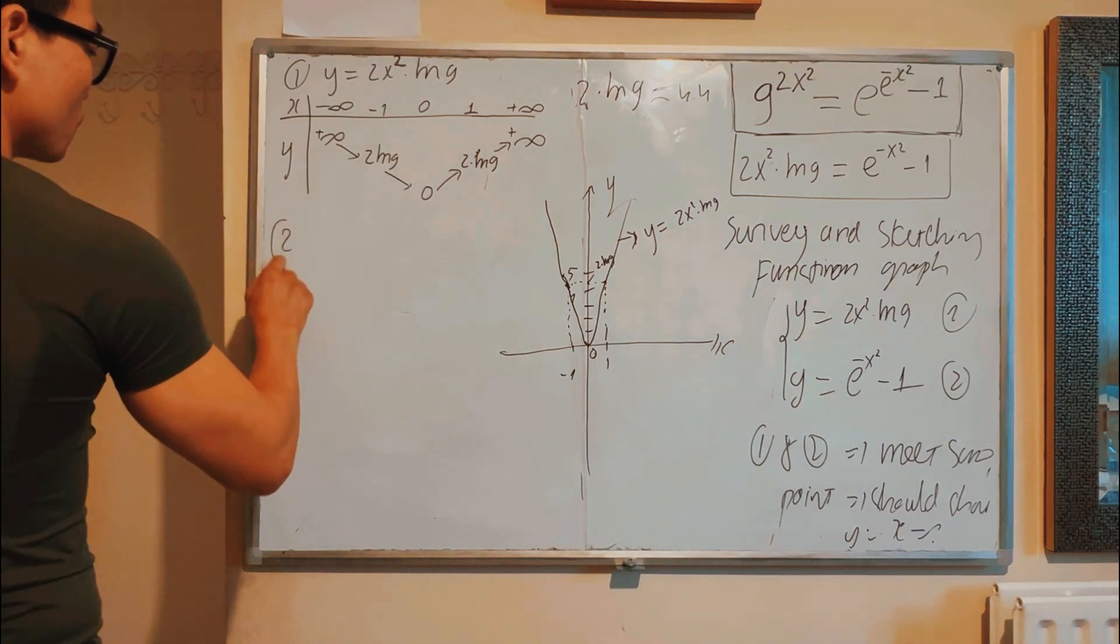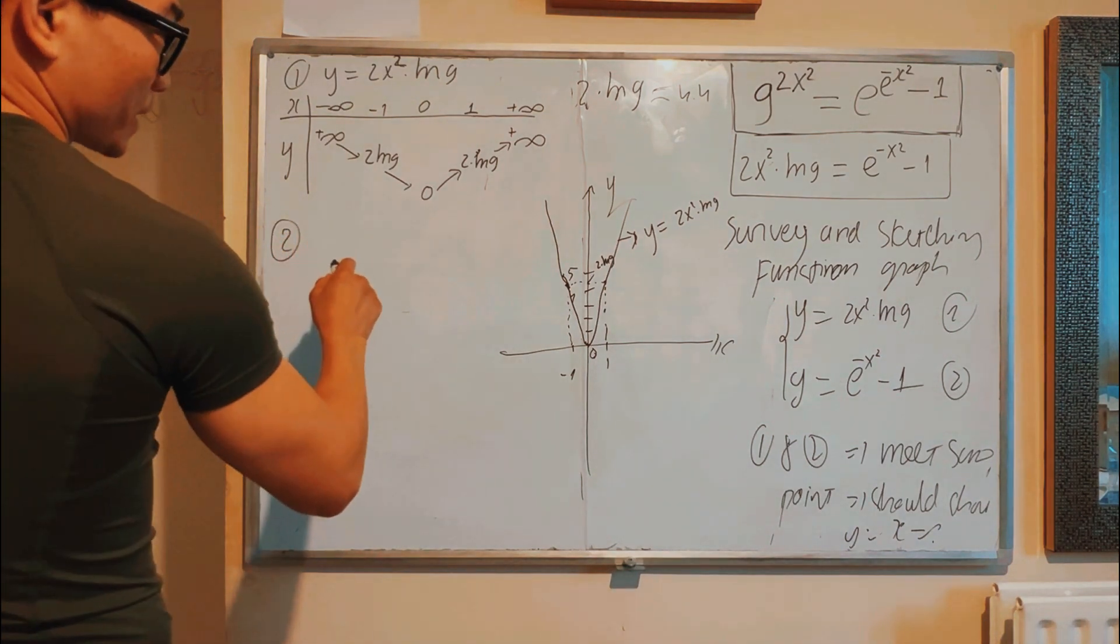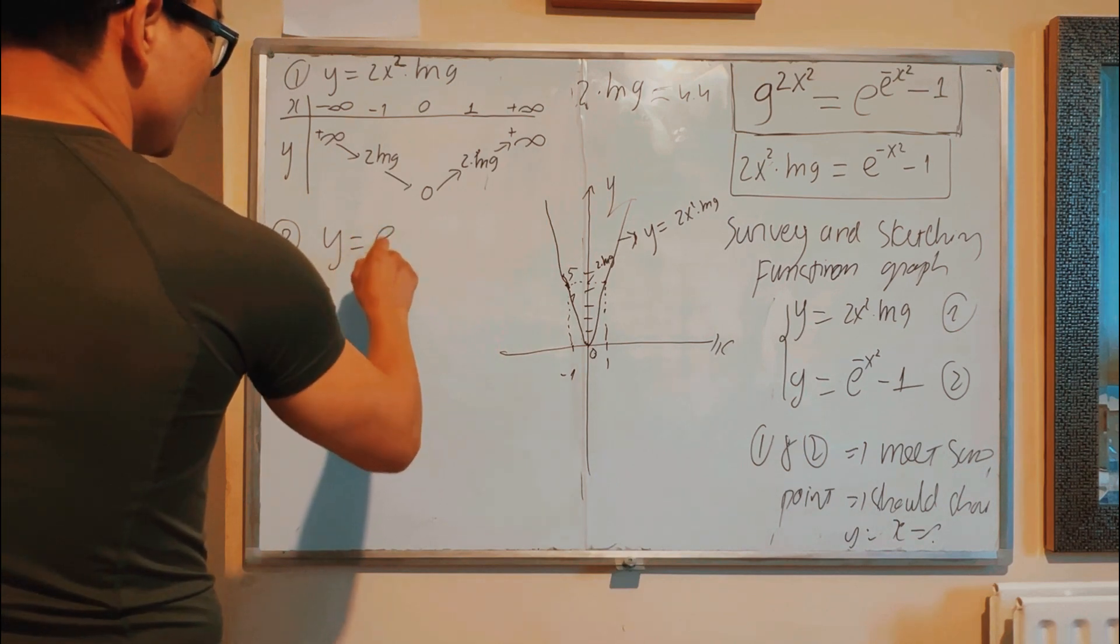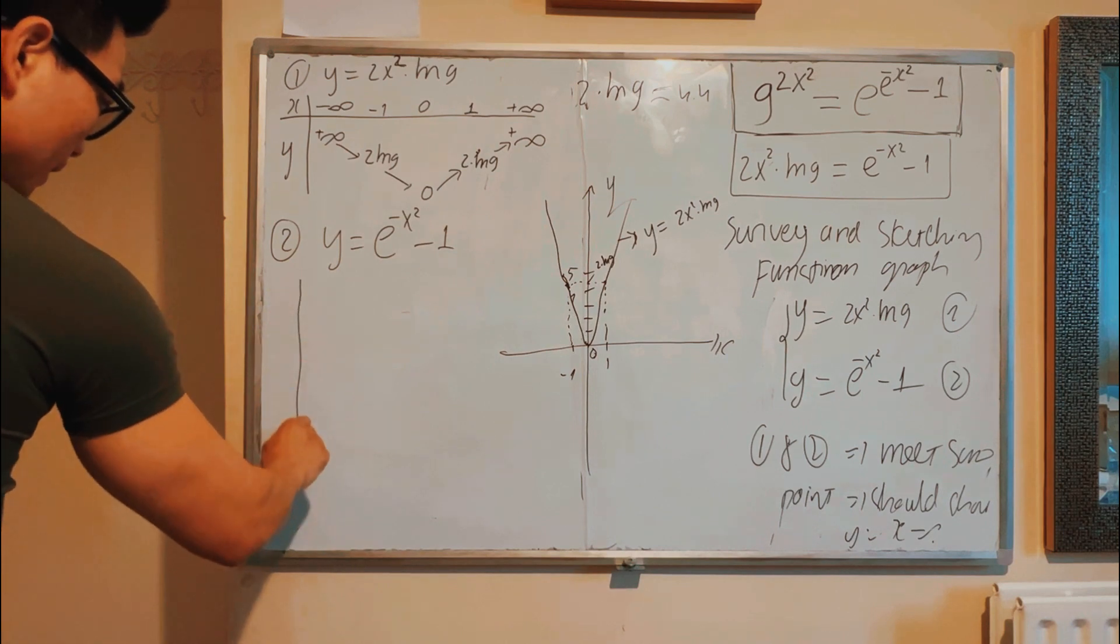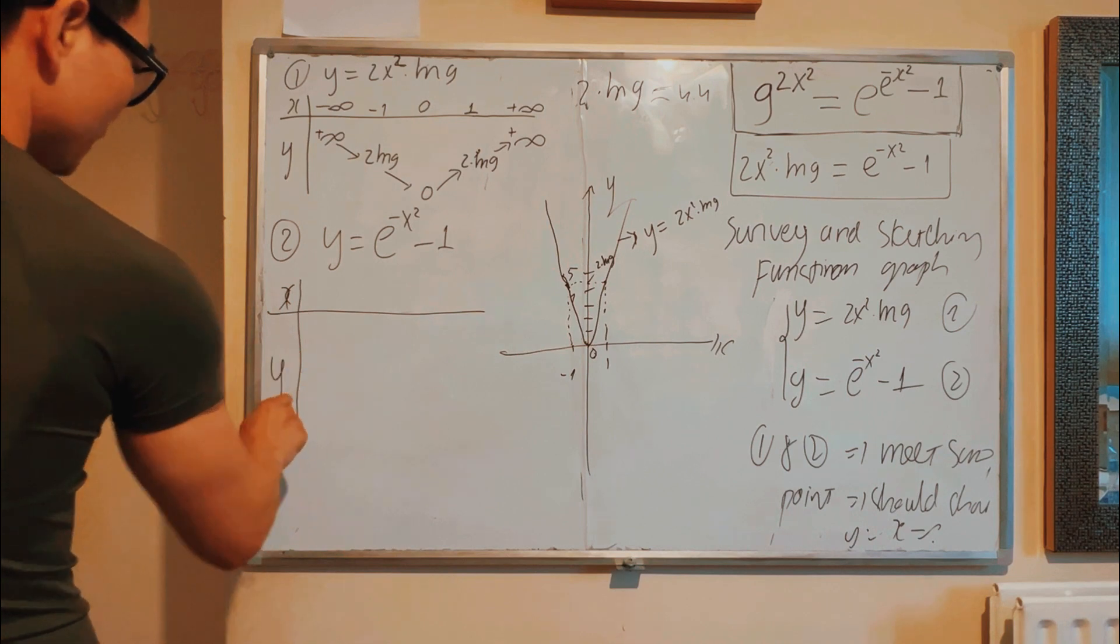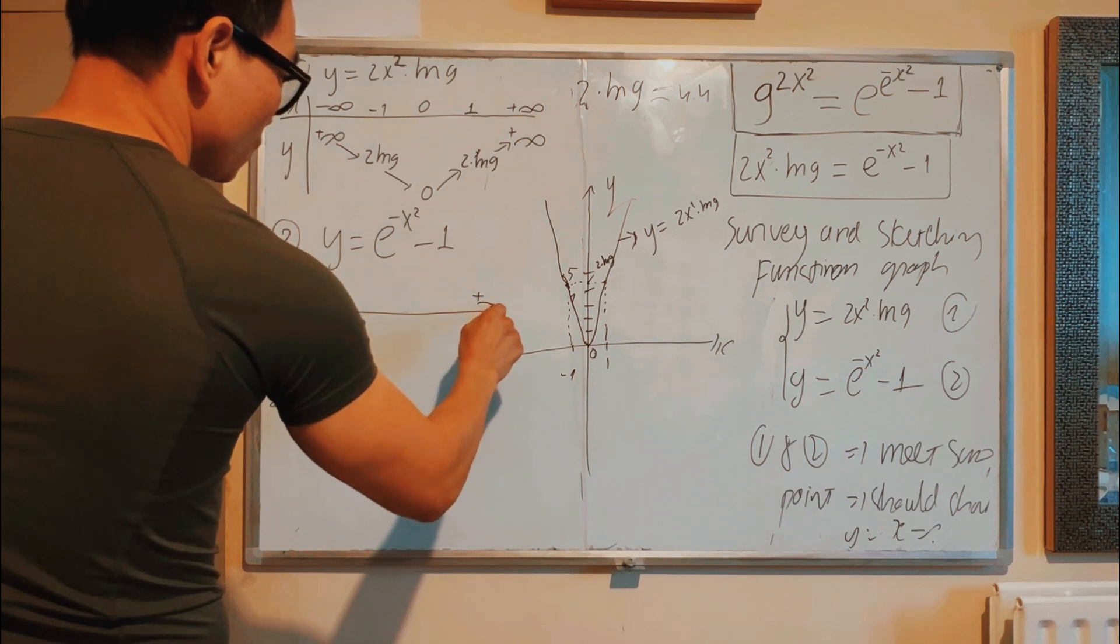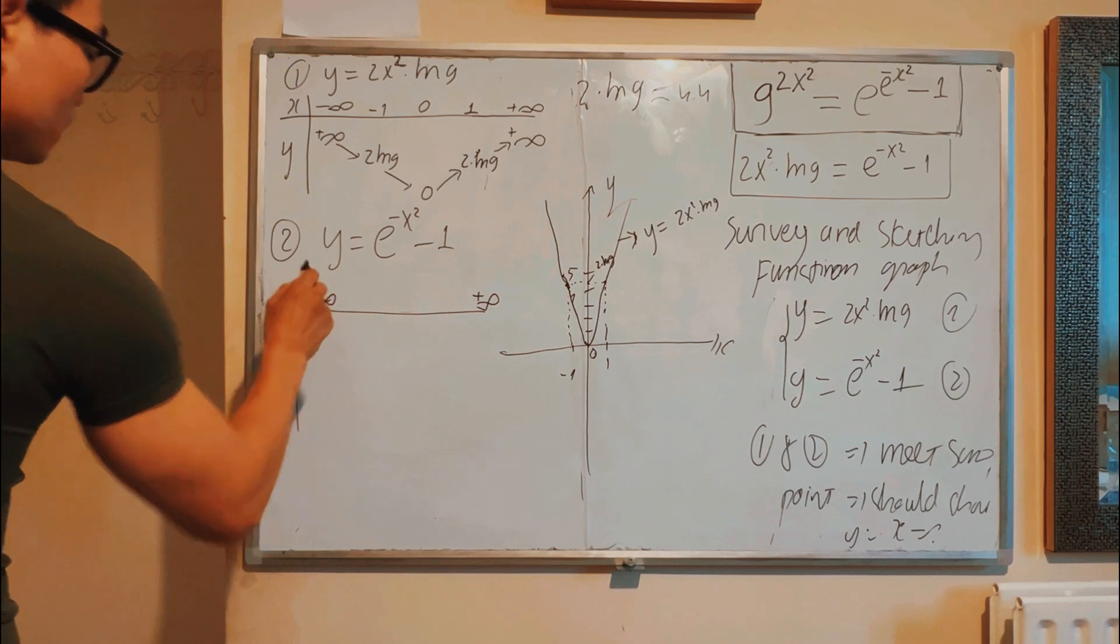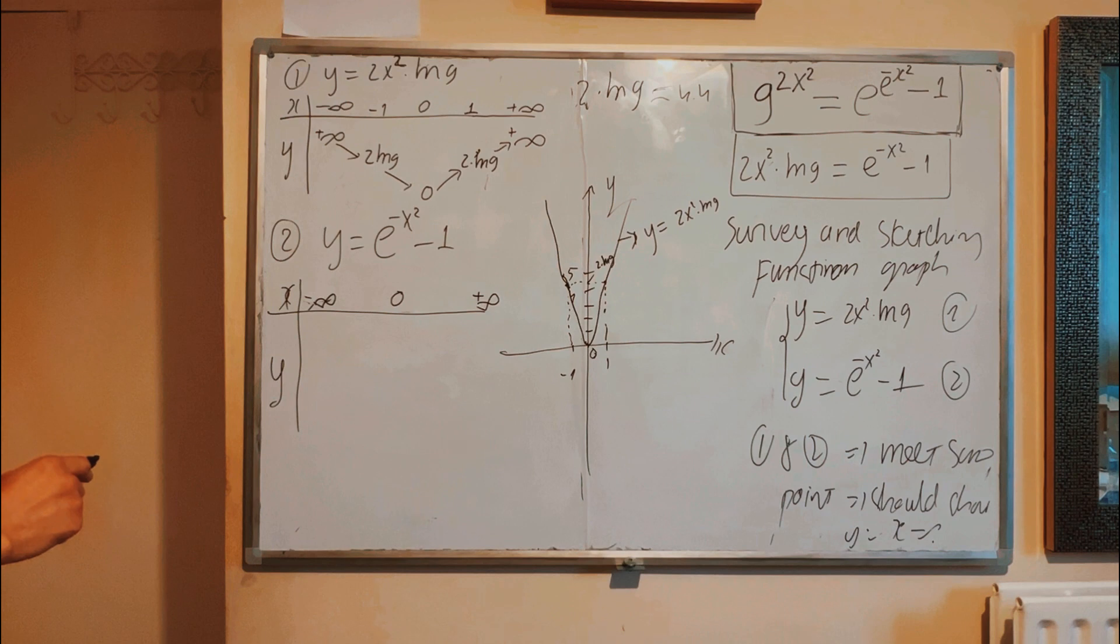Now next step, you do survey and sketching function graph 2, y equal to e^(x²) - 1. You have to do the table like the same, so the function with respect to X. X from negative infinity to positive infinity as well.